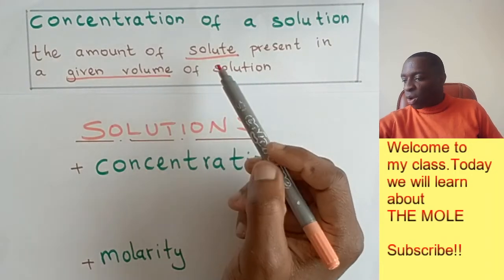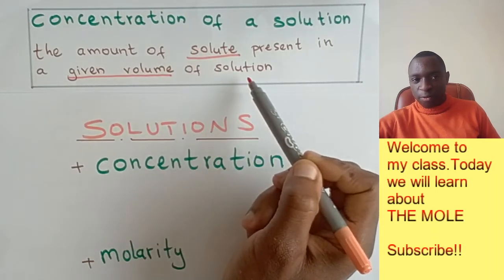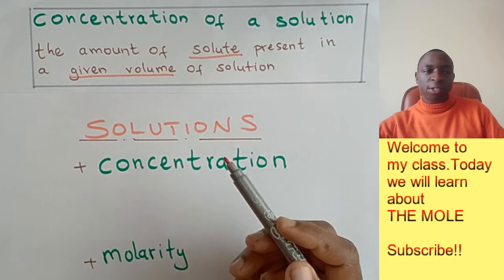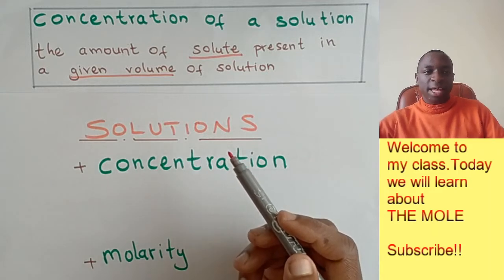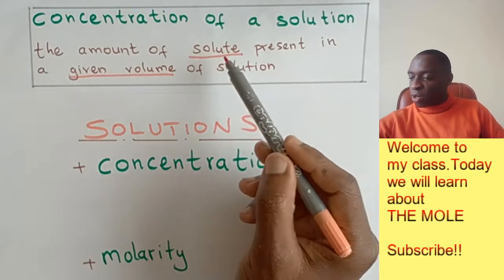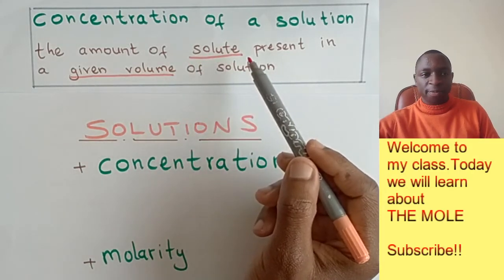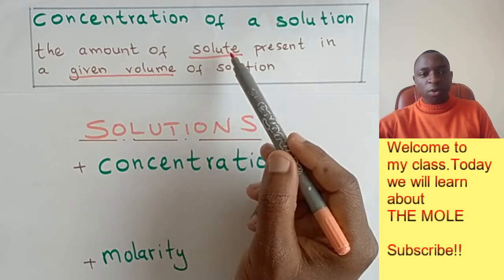So the solute, when it is dissolved in a solvent, it forms a solution. For example, if you dissolve salt in water, then you have a salt solution. So here, when we are talking about the solute, the salt is the solute here. So let's say the salt here is sodium chloride.